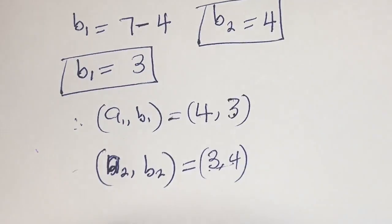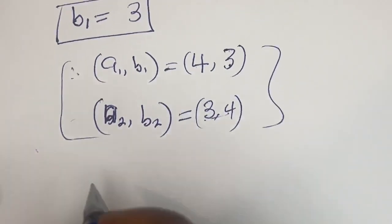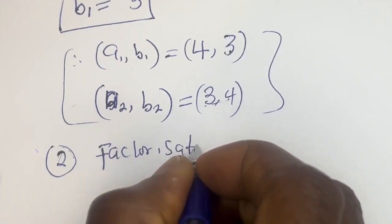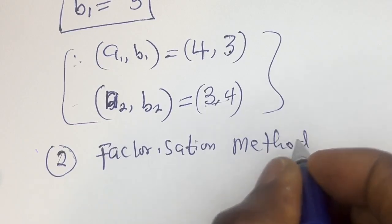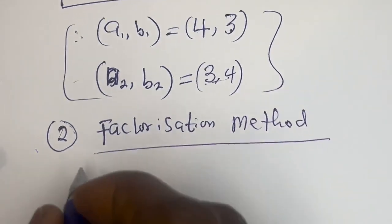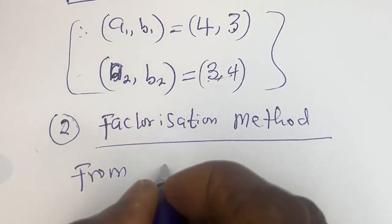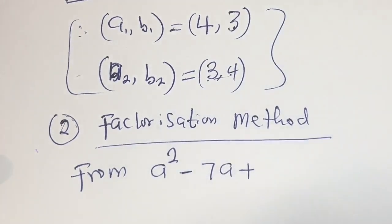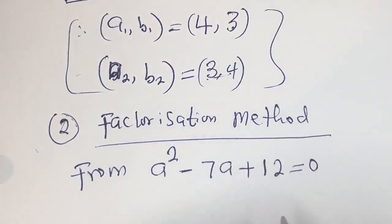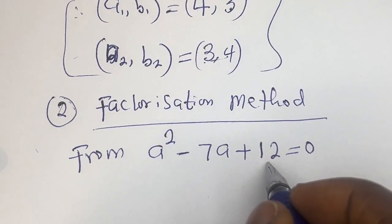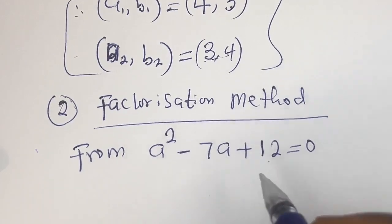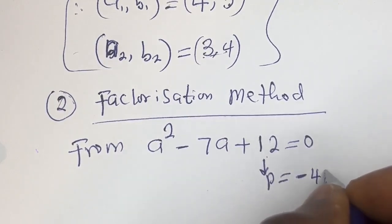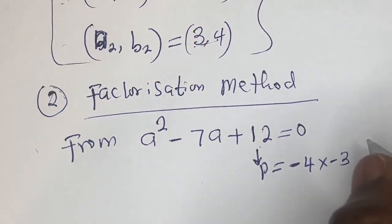You can see that the value of a1 equals the value of b2, and the value of b1 equals the value of a2. Now let's solve using the factorization method. From a squared minus 7a plus 12 equals 0, we look for two numbers such that their product equals 12 (the constant) and their sum equals minus 7 (the coefficient of a). The product: minus 4 multiplied by minus 3 equals 12.